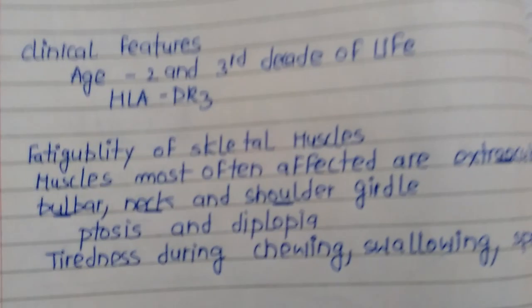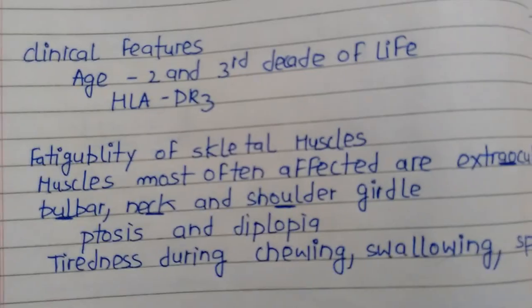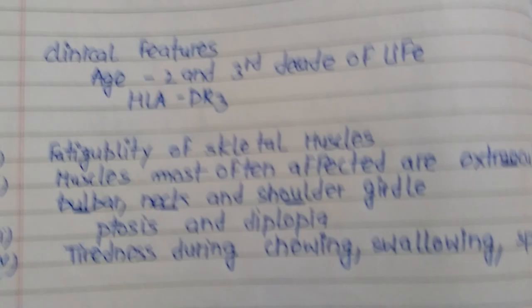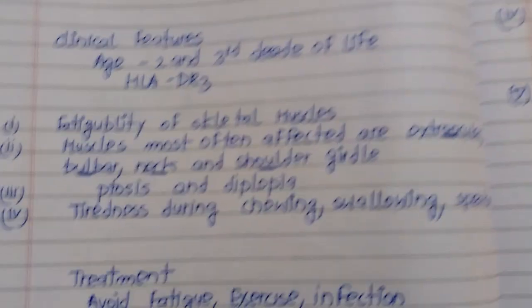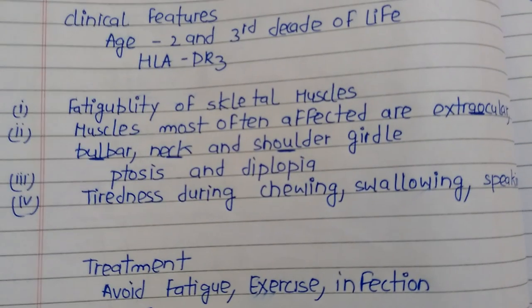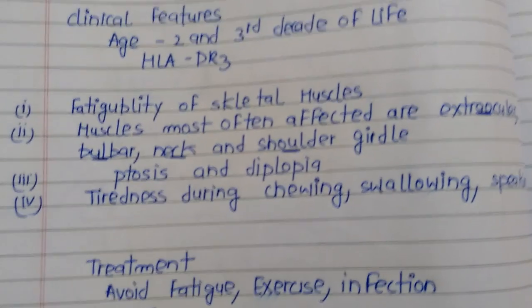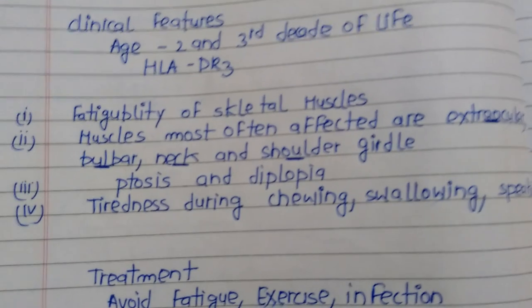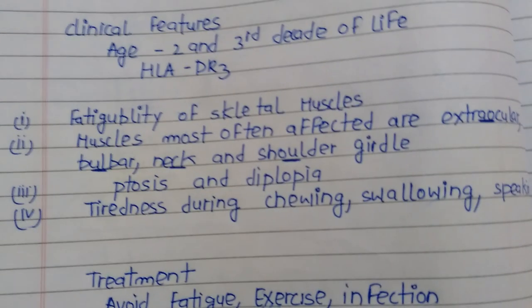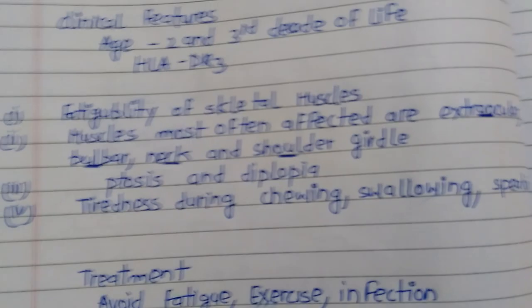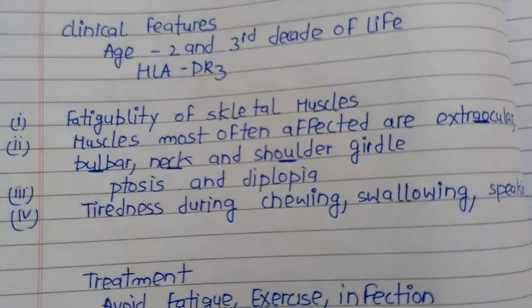Ptosis means drooping of the eyelids, and diplopia means double vision — patients experience both. When the patient is tired, these symptoms worsen. If chewing food becomes a problem, the patient has difficulty eating as well.